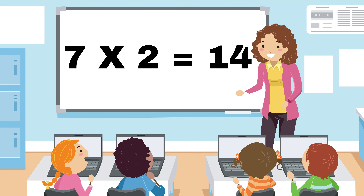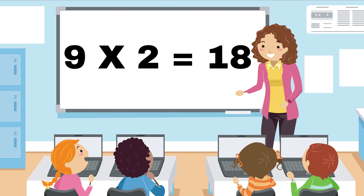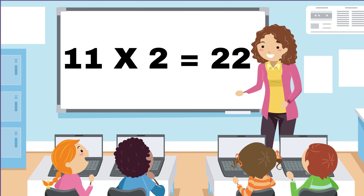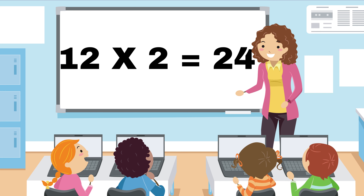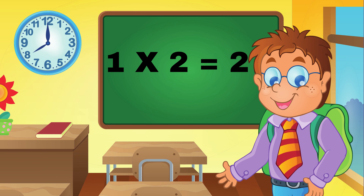7 x 2 equals 40. 8 x 2 equals 60. 9 x 2 equals 80. 10 times 2 equals 20. 11 times 2 equals 22. 12 times 2 equals 24.